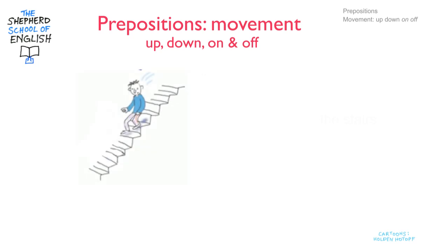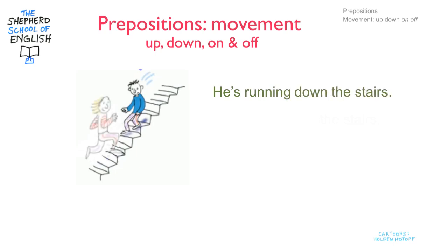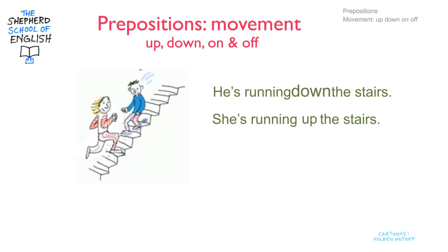Here's the first one. It's a boy on the stairs. He's running down the stairs. Now here's a girl — she's running up the stairs. She's running up and he's running down. And here's the diagram with up and down.